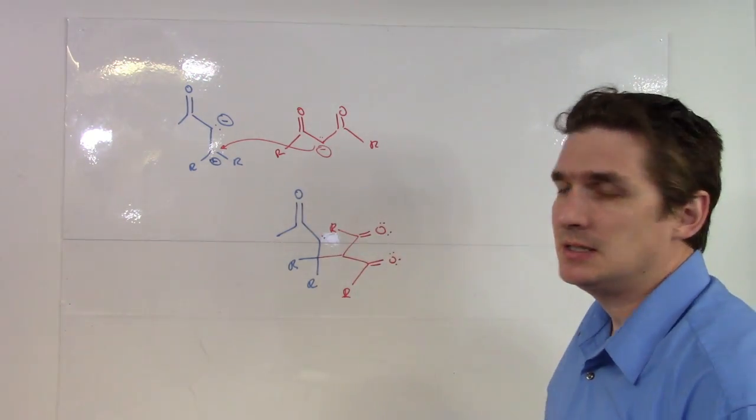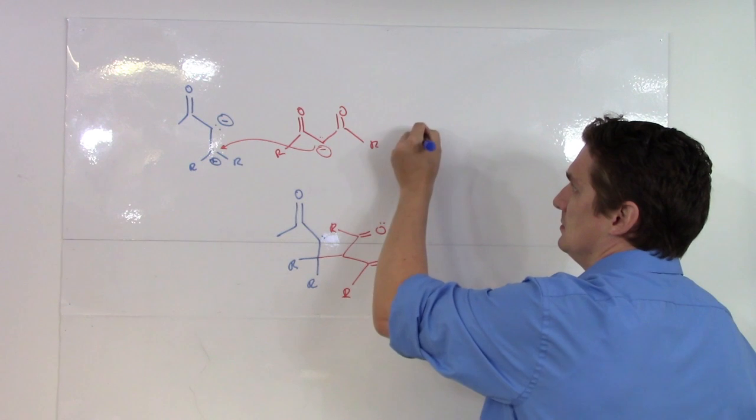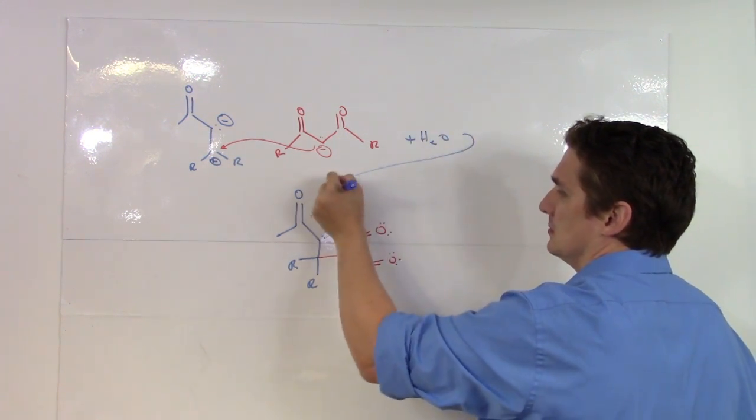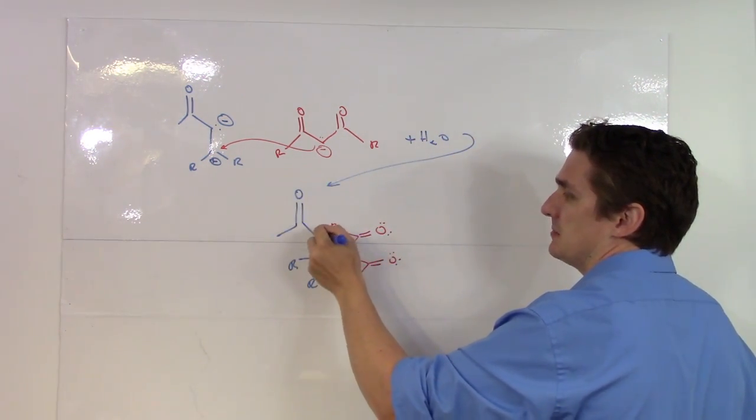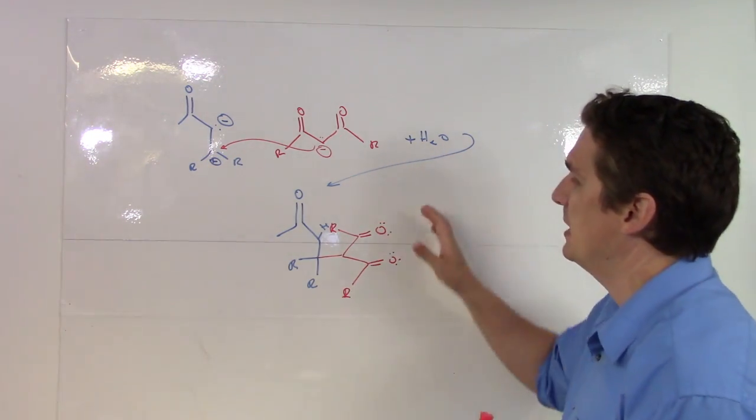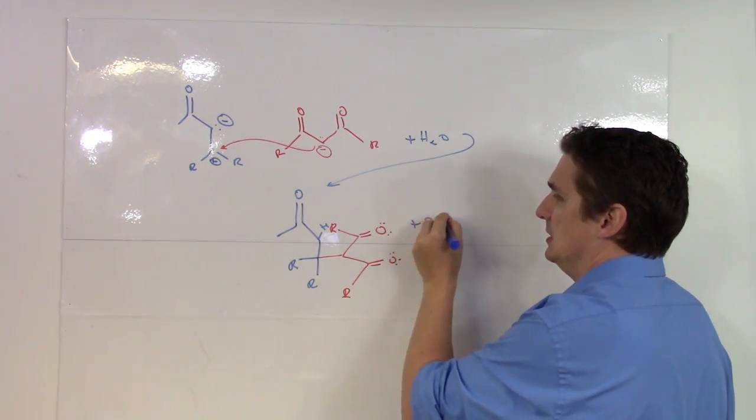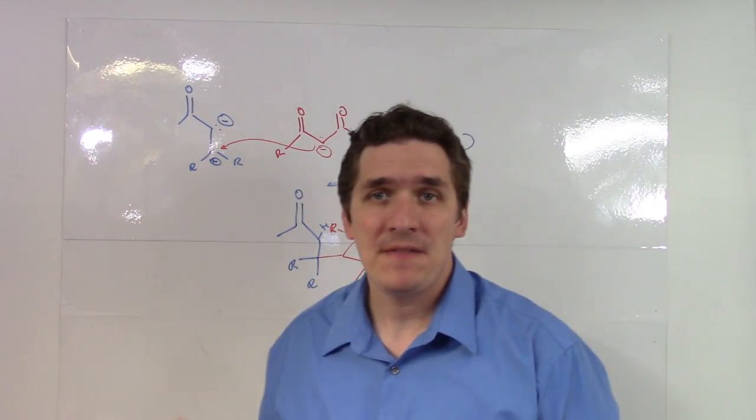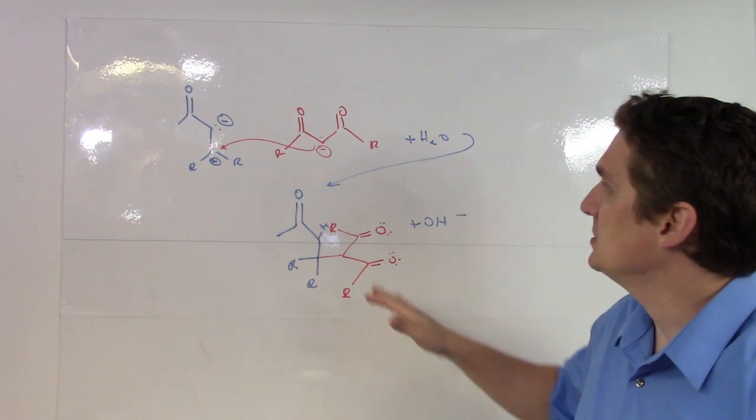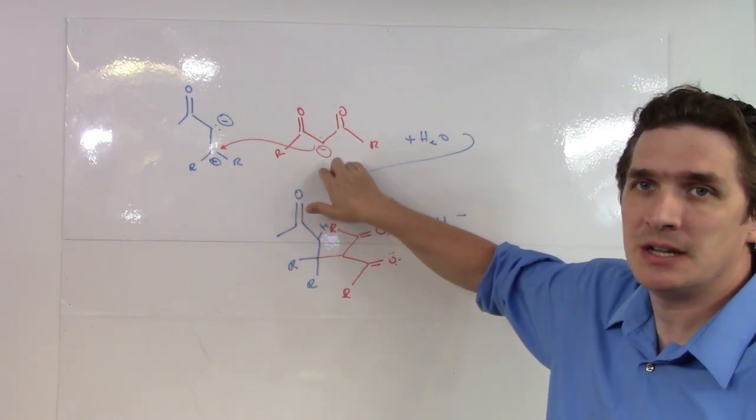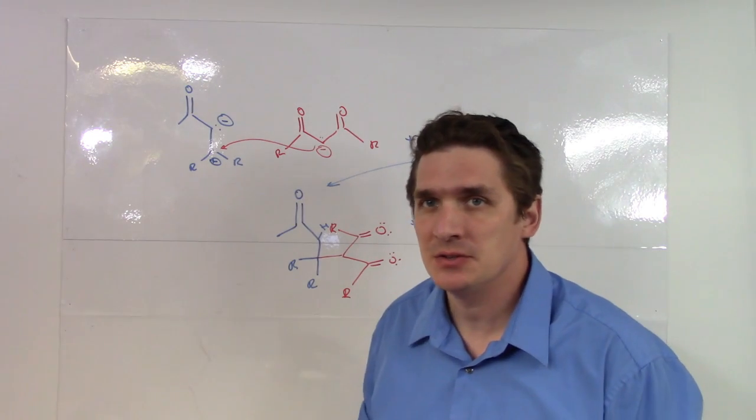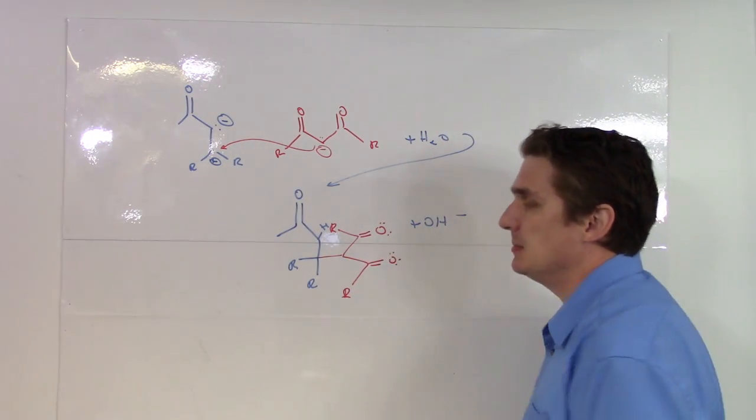And since our base abstracted it to give us water, that water can further lose this proton again to give us back the hydroxide and give us this compound. So, off the bat here we actually have a reaction for the Michael addition where we take our diketone and it attacks our alpha, beta unsaturated ketone to give us this complex here.